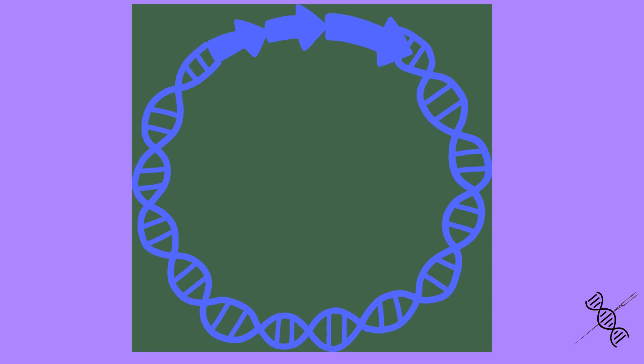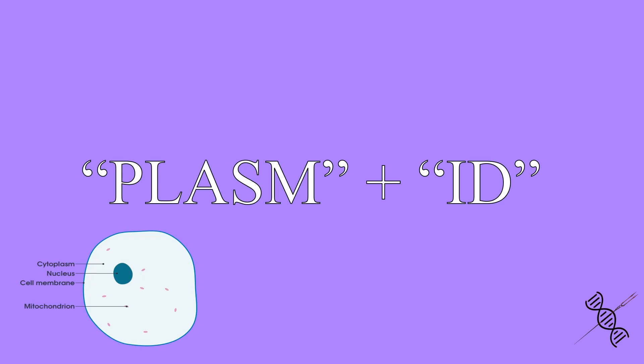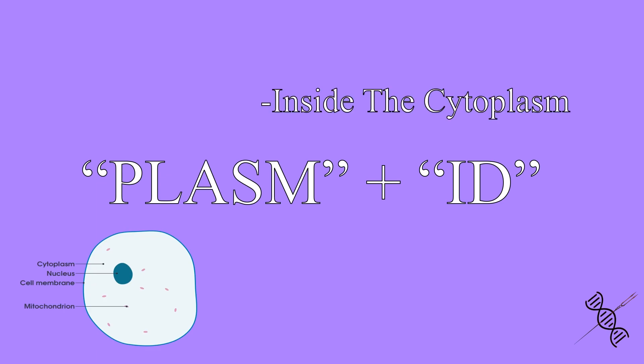Before mentioning the history and origin of plasmid DNA, let's define what a plasmid actually is. The word plasmid is a combination of two words: 'plasm,' meaning cytoplasm of the cell, and 'id,' meaning in. So a plasmid is the DNA which is located in the cytoplasm of the cell.